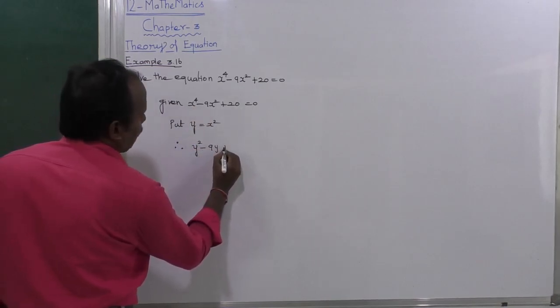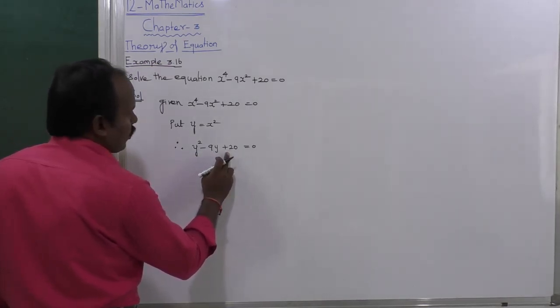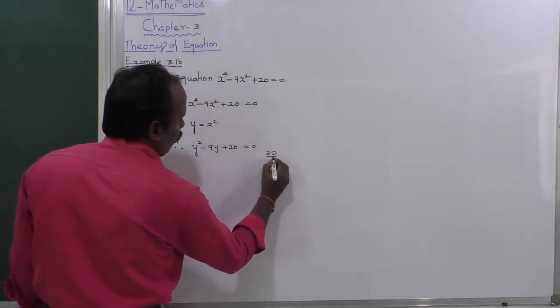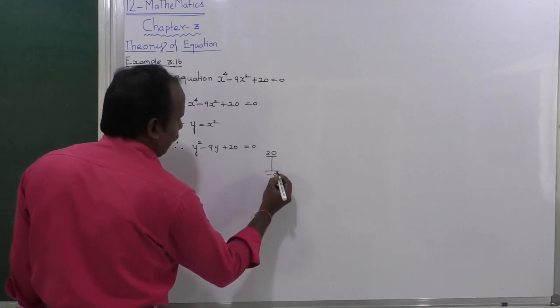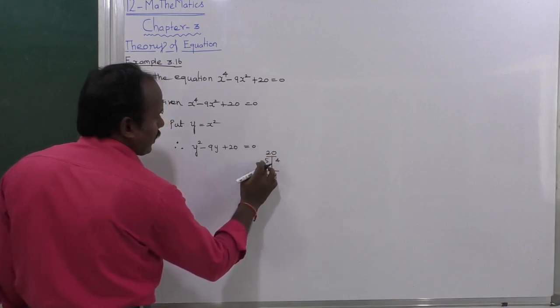y^2 - 9y + 20 = 0. To factor this, we need two numbers whose product is 20 and sum is -9. We have 5×4 = 20 and 5+4 = 9.